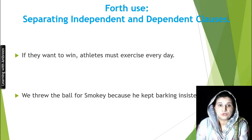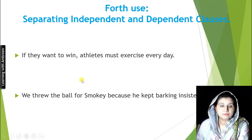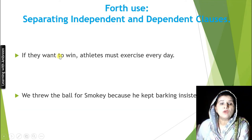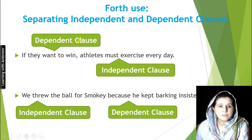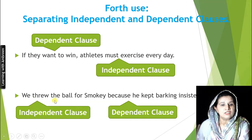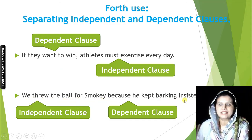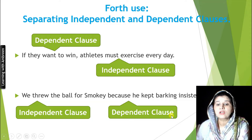Fourth use: separating independent and dependent clauses. Whenever the dependent clause is at the start of the sentence, always separate it through a comma. For example: 'If they want to win, athletes must exercise every day.' However, when the independent clause is first and the dependent clause comes afterward — as in 'We threw the ball for Smoky because he kept barking insistently' — no comma is needed.